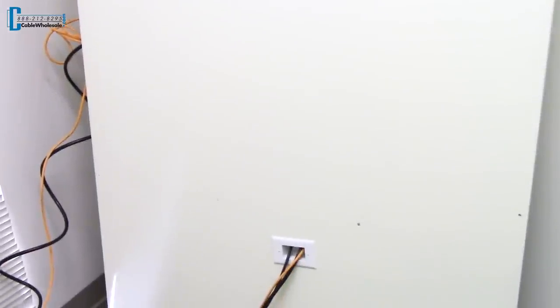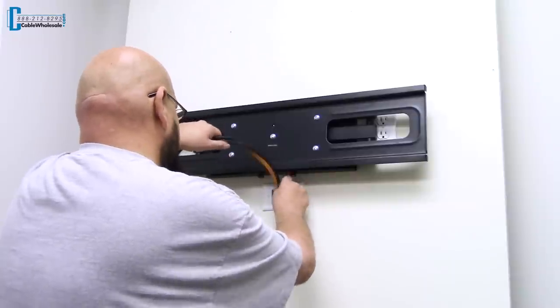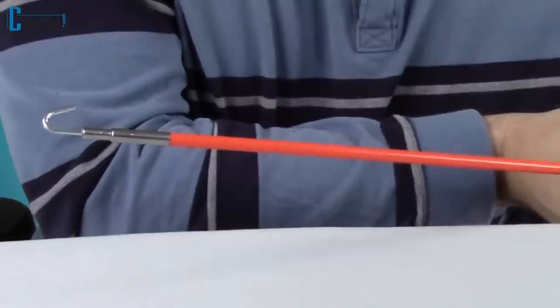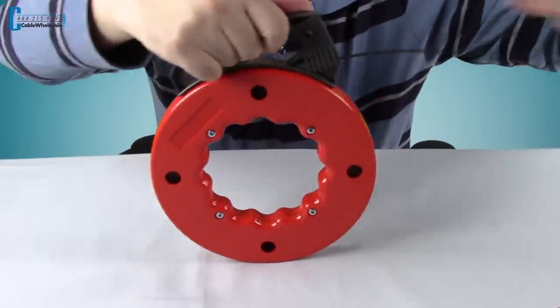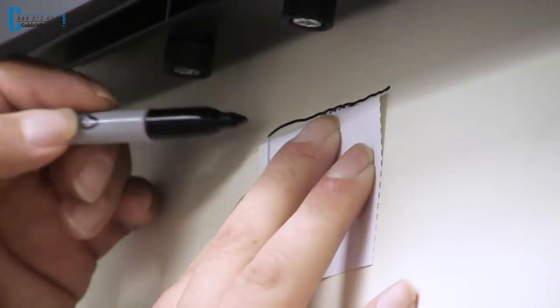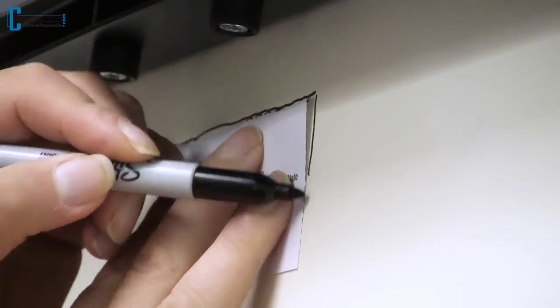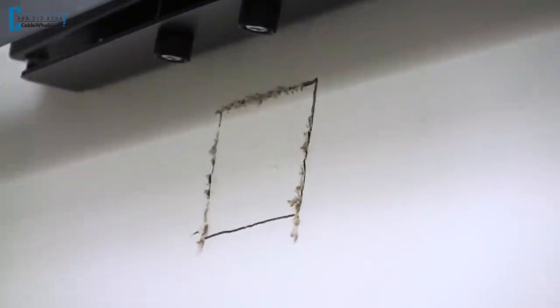When we cut our holes, we will be able to pull the cables through pretty easily. If there is no installation behind the drywall, you may need to use a pull rod or fish tape to get the cables from one hole to the other. Trace the template on your wall. Use a drywall saw to cut out the drywall.